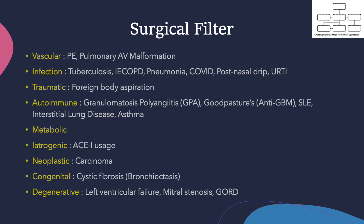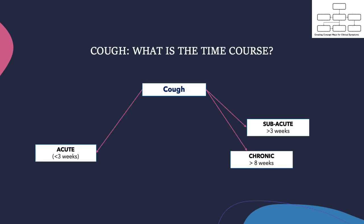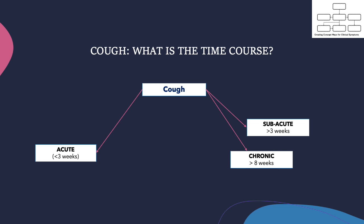Feel free to pause this video and take a moment to process if this is new to you. Don't worry if you cannot memorize everything. It is important to have a good thought process and good clinical reasoning first. When it comes to cough, you should ask yourself: what is the time course? Is it acute or is it more of a long-standing cough? Then you need to ask yourself, is it productive of sputum? Is it a dry or wet cough? I personally often find this is the most important or useful piece of information when I see patients in the respiratory admissions unit.